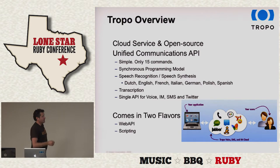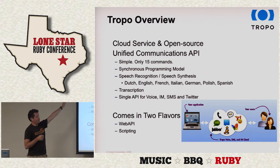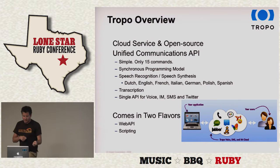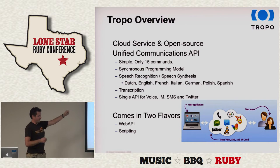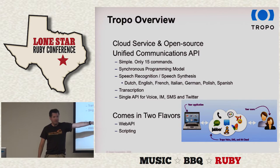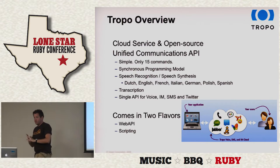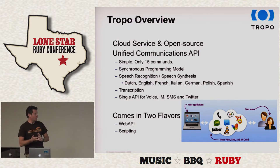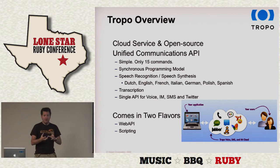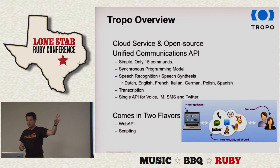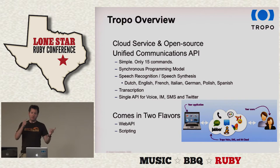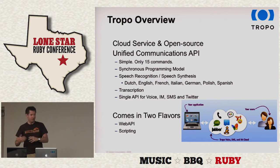What Tropo does is give you an open source API that can be consumed from the cloud or on your own servers, that really takes telephony and makes it very simple. You can make phone calls with 15 commands, and it's not limited to phone calls — you can do voice, instant messaging, Twitter, and SMS. You're using all the same APIs to achieve that multi-channel capability. It also does speech recognition — right now nine languages in total, and we're in the process of rolling out 20 languages, both speech synthesis and speech recognition.